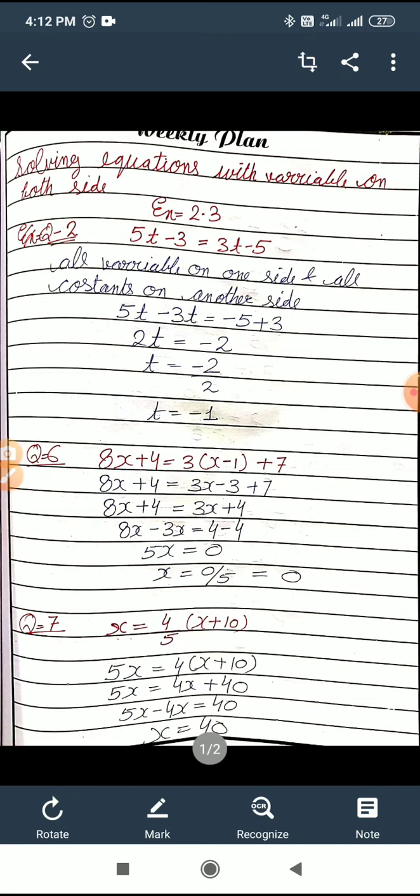Variables one side, constants the other side. What are the variables? 5t and 3t. What are the constants? Minus 3 and minus 5. So on the other side it will become 5t minus 3t. Minus 5 was there, so minus 3 has come this side. Minus 3 has come, so it becomes plus 3.